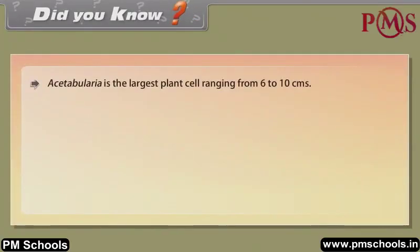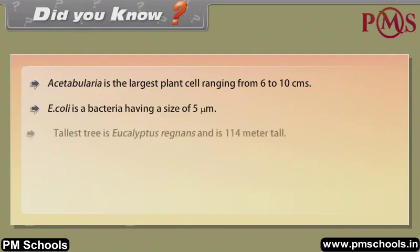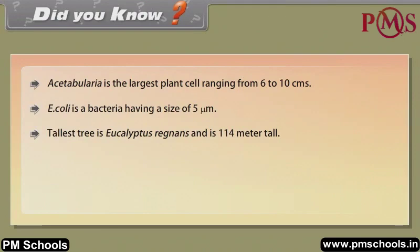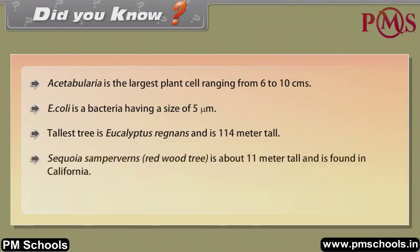Did you know? Acetabularia is the largest plant cell, ranging from 6 to 10 cm. E. coli is a bacterium having a size of 5 micrometers. The tallest tree is Eucalyptus regnans and is 114 meters tall. Sequoia sempervirens, a redwood tree, is about 11 meters in circumference and is found in California. The elephant is the largest land animal.